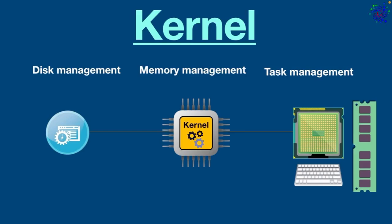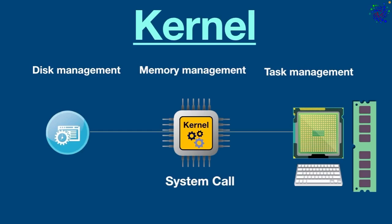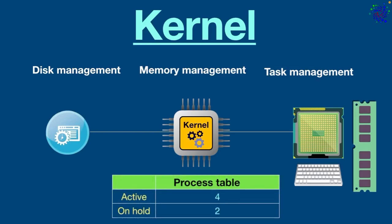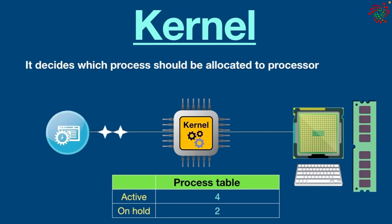For example, when a program wants to access hardware resources such as RAM, it sends a request to the kernel. This request is called a system call. After receiving a system call, the kernel accesses the requested hardware and responds back to the program.